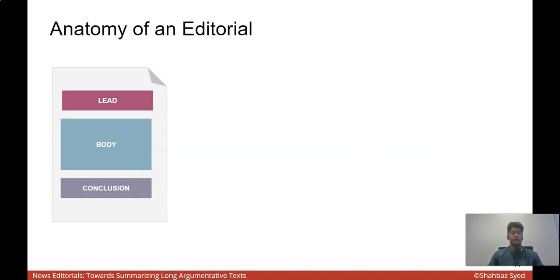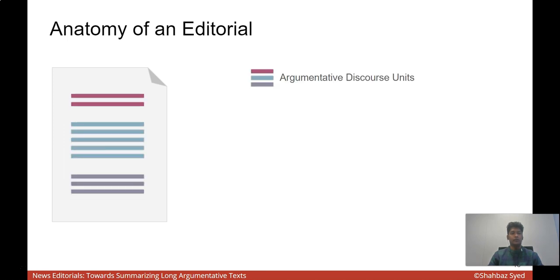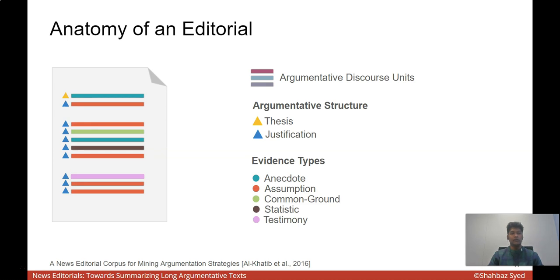Let us look at the anatomy of an editorial. Given this three-part layout of lead-body-conclusion, an editorial is composed of a sequence of argumentative discourse units. These can be broadly classified into two types: thesis and justification. The thesis is the core message of the editorial, which states a topic and the stance towards this topic. The justifications that follow try to support these thesis and try to persuade the reader. One could also look at a more fine-grained structure in terms of evidence types, where each of the argumentative discourse units provides evidence in various forms. Let me show you an example.